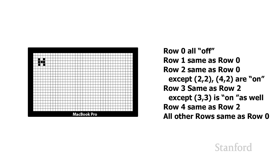Here is a second approach to describing the exact same screen. I say: row 0, it's all off. Row 1 is the same as row 0. Row 2 is the same as row 0, except 2,2 and 4,2 are both on. Row 3 is the same as row 2, except 3,3 is on as well. Row 4 is the same as row 2. And all the other rows are exactly the same as row 0. I've described the exact same scene and the TA gets the exact same information as if I had read off all the individual pixel values, but this is a much more compact way of describing the exact same situation.